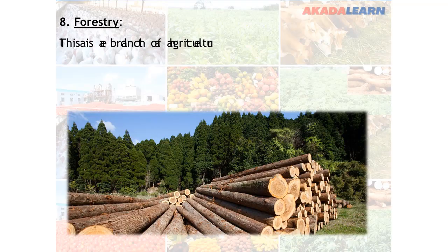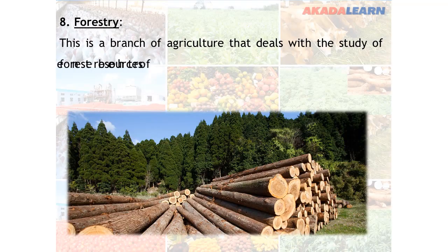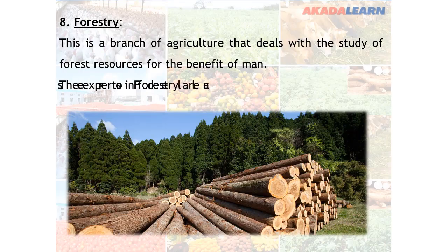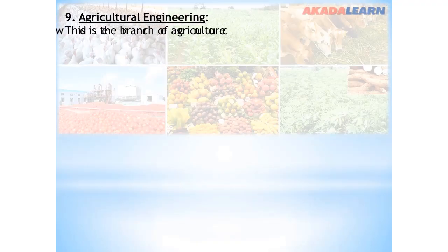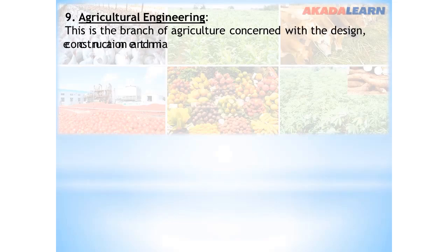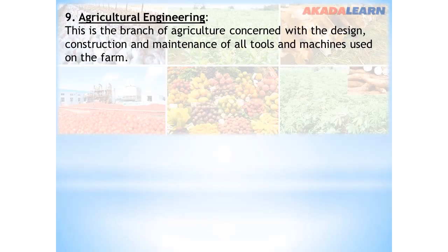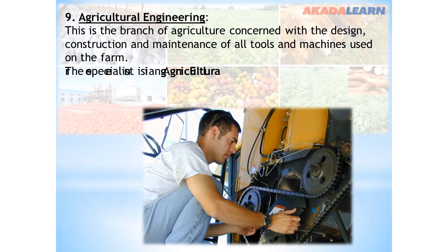Forestry is a branch of agriculture that deals with the study of forest resources for the benefit of man. The experts in forestry are called forest guards. Agricultural engineering is a branch of agriculture concerned with the design, construction, and maintenance of all tools and machines used on the farm. The expert is known as an agricultural engineer.